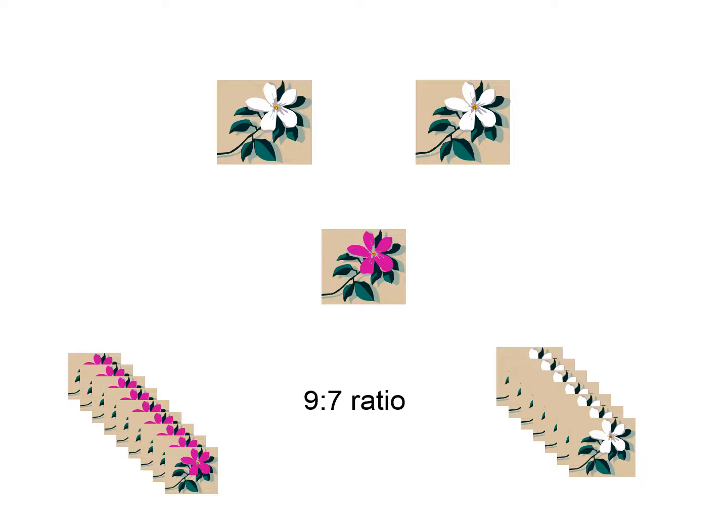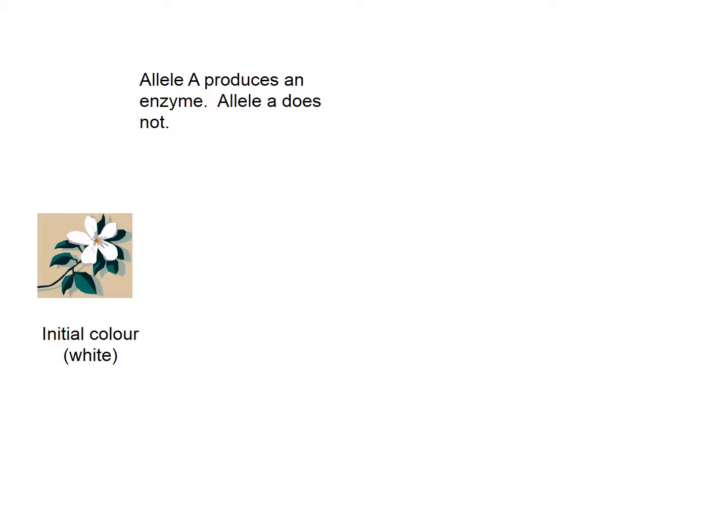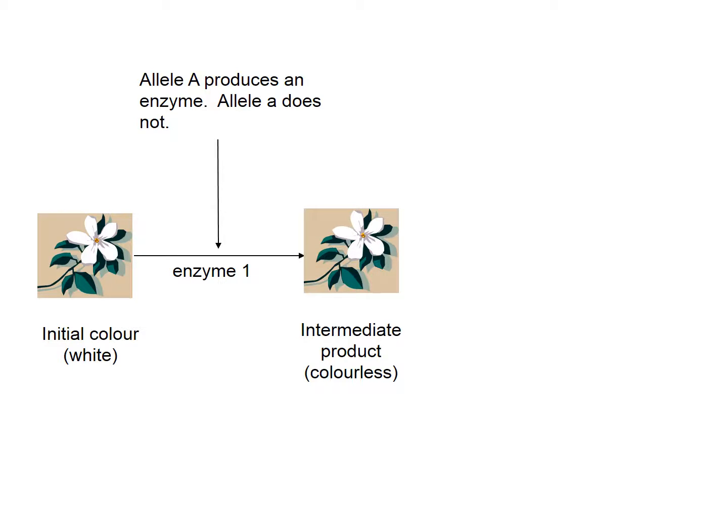I want to talk about the science behind what happened here, then we'll go through the genetics. The initial colour of sweet peas is white — that's their default colour. If you have a particular gene, which we'll call A, a dominant allele will code for an enzyme; the recessive allele does not. So if you've got the dominant A, you get the expression of this gene and an enzyme. That enzyme will affect the biochemistry of this flower and give you an intermediate product. In this particular example it's colourless — I'm following the OCR textbook here, though you might find other examples where it's described as a red flower. For the purposes of the OCR textbook, we'll stick with colourless.